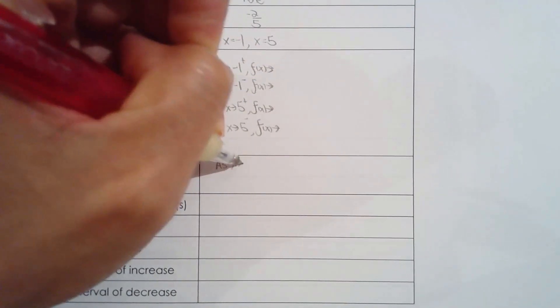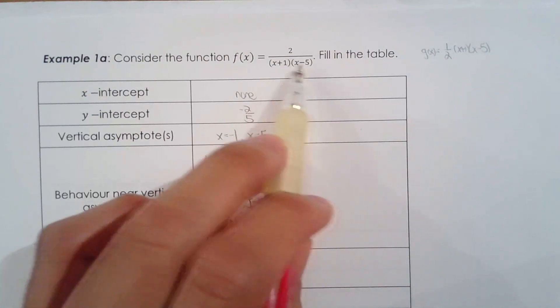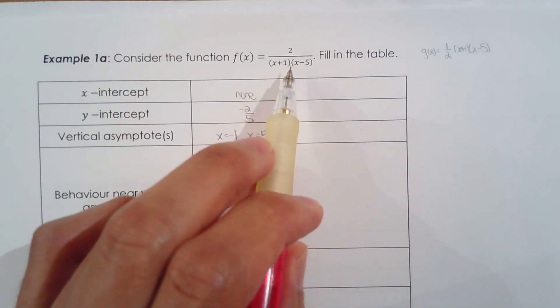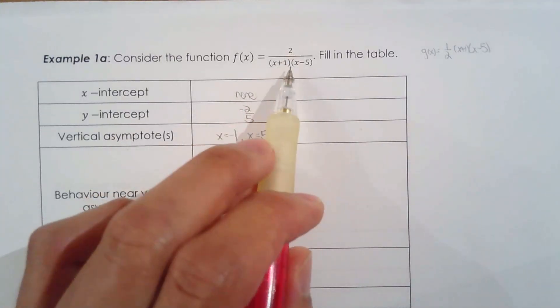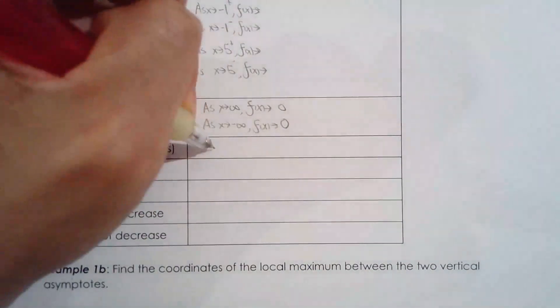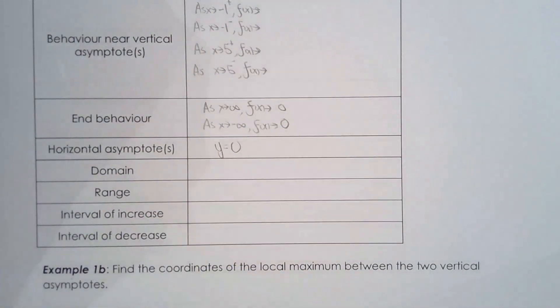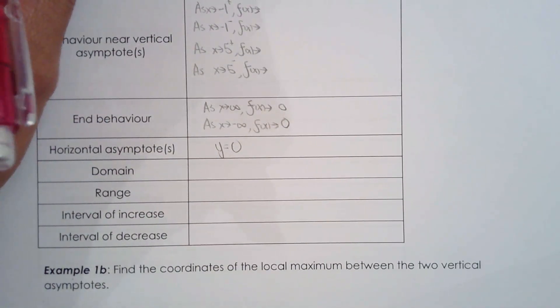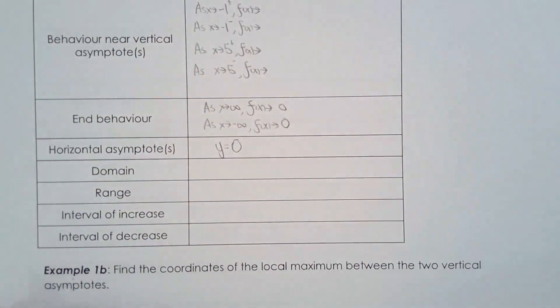For end behavior: as x approaches infinity, what happens to f of x? As x approaches negative infinity? I know it's going to approach zero, because the denominator is a quadratic — it's going to get so much larger than the numerator 2 as x becomes large in magnitude. Whether x becomes large positive or large negative, this will approach zero. Since this is approaching zero, the horizontal asymptote must be y equals zero.